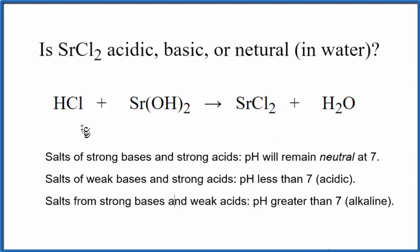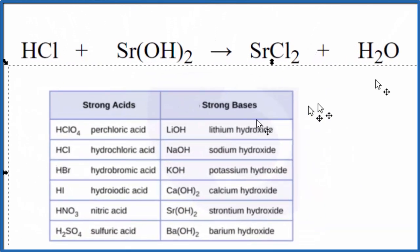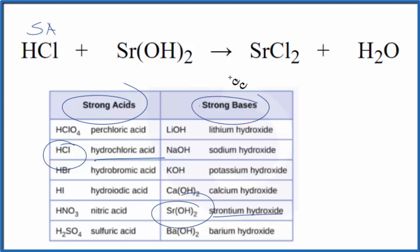Once we have the equation, we need to look at the strength of the acid and the base. This is a really good chart to memorize of some common strong acids and bases. We go down, and there's hydrochloric acid, strong acid, little SA up there. Strontium hydroxide is right here. It's considered a strong base. So we'll put an SB there.